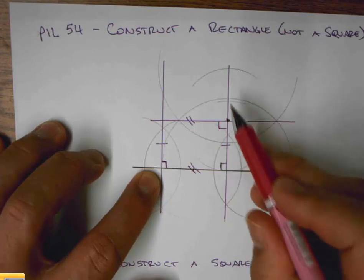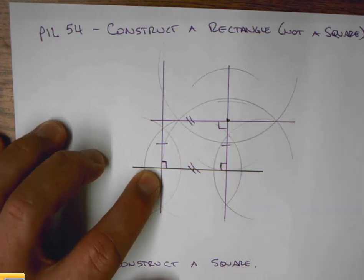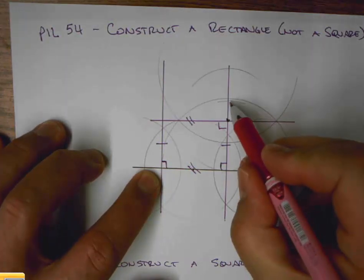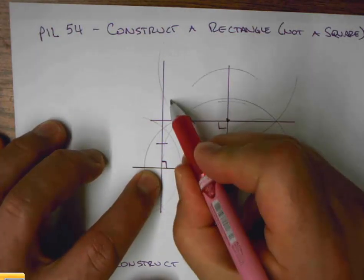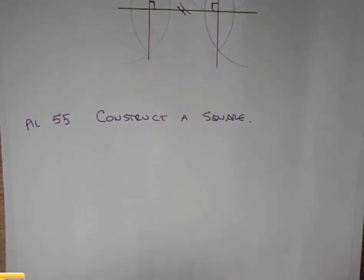constructed a perpendicular through that point to ensure that it was a rectangle. We could do the same idea, ensuring it was here, and that would then give us a square. All four sides would then be congruent. But I'm going to show you a different way of constructing a square.